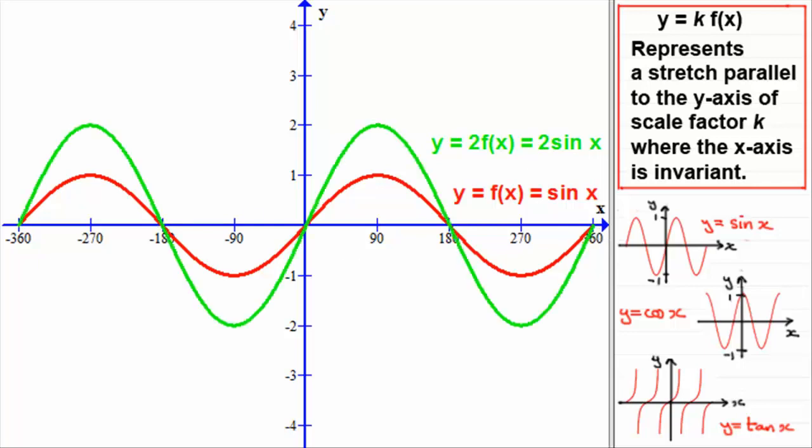Here it is, the graph of y equals 2 f of x, 2 sin x. You can see that that point here is double that point there. If we had a point at a half here, double it, it's going to go to 1 for this particular x value.